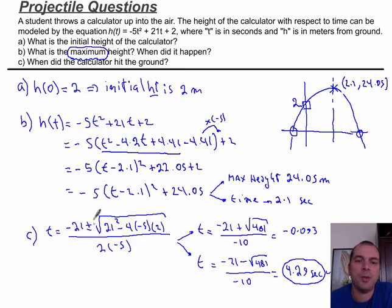And I did that in advance. Minus 21 plus or minus 21 squared minus 4 times minus 5 times 2. Notice that a minus and a minus here would make this be plus, right? So, I'm going to get 481. And my 2a is 2 times minus 5, which would be minus 10. When we plug this into our calculator, we're going to get negative 0.093 and 4.29. So, now let's answer the question. When did the calculator hit the ground? Well, it didn't hit the ground here. This part doesn't even exist. It went up. It got to 24.05. And then it hit the ground after 4.29. So, answer is hit ground after 4.29 seconds.